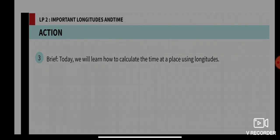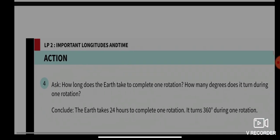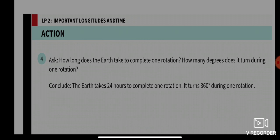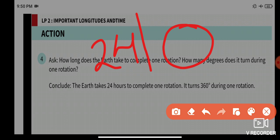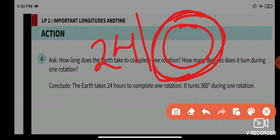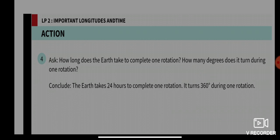Today we will learn how to calculate the time at a place using longitudes. How long does the Earth take to complete one rotation, and how many degrees does it turn during one rotation? The answer: in a day we have 24 hours to complete one rotation, and it turns 360 degrees during that rotation.